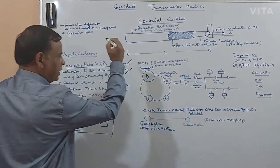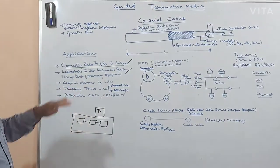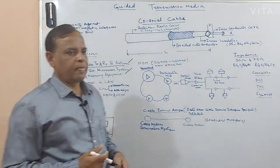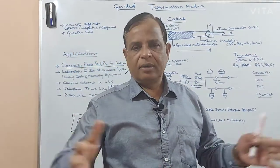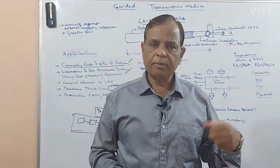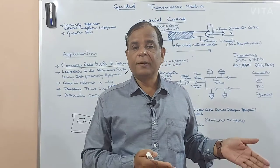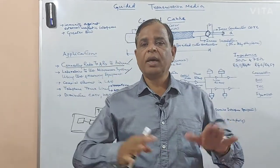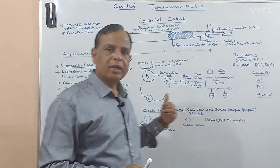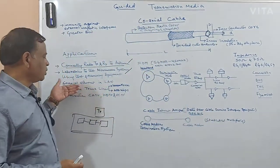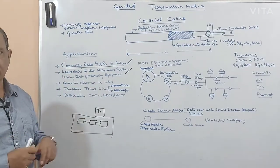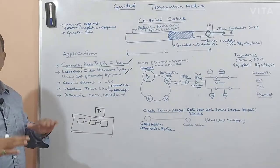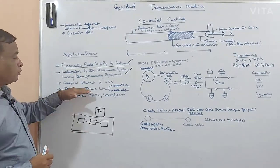The coaxial cable is maximum used in microwave equipment for testing and measuring. Also, before twisted pair cable — UTP or STP — was available, coaxial cables were maximum used in LAN Ethernet computer networks.